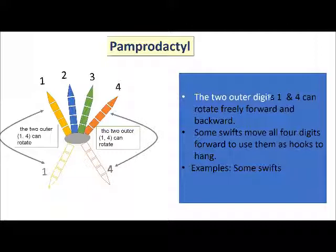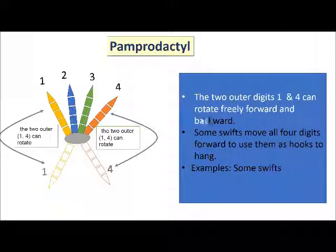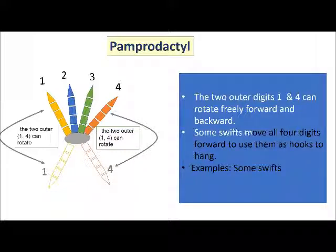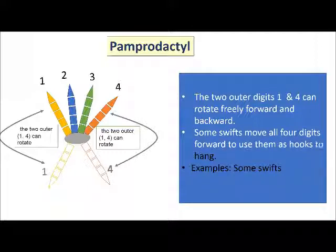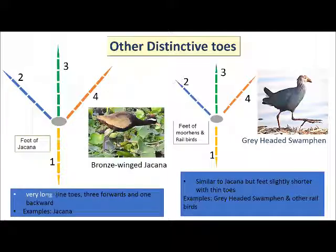Pamprodactyl: in this foot arrangement, the two outer digits, marked as 1 and 4, can rotate freely forward and backward. Some swifts move all four digits forward to use them as hooks to hang. Examples are some swifts.